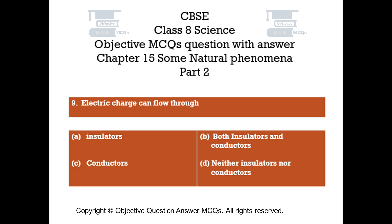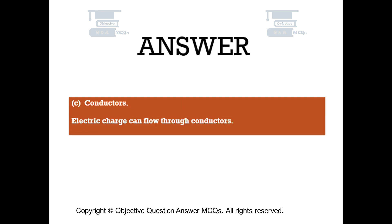Question number 9: Electric charge can flow through. Option A: Insulators. Option B: Both insulators and conductors. Option C: Conductors. Option D: Neither insulators nor conductors. The right answer is Option C — conductors. Electric charge can flow through conductors.